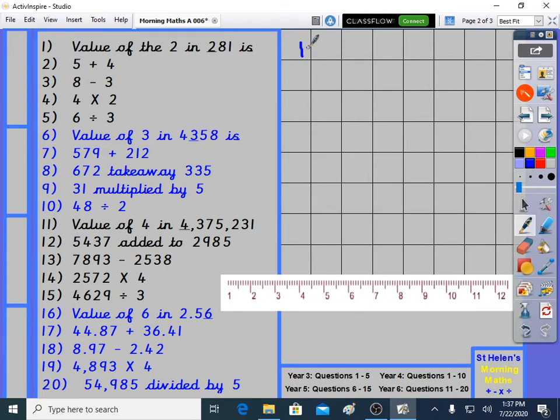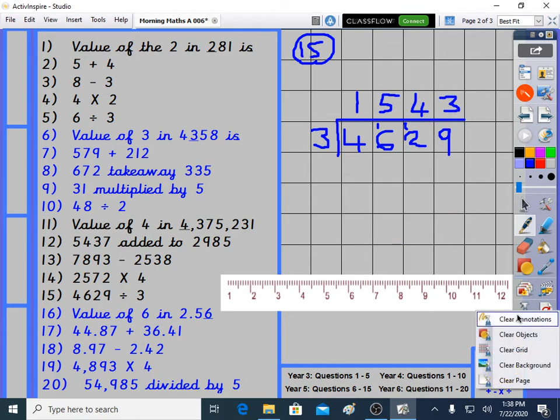Question 15. Last of the year 5 level questions. 4,629 divided by 3. How many 3s into 4? It's 1. How many 3s in 16? 3, 6, 9, 12 and 15 is 5. Remainder 1. How many 3s in 12? 3, 6, 9, 12 is 4. How many 3s in 9? 3, 6, 9 is 3. 1,543.